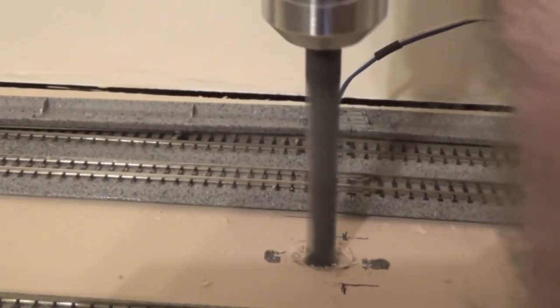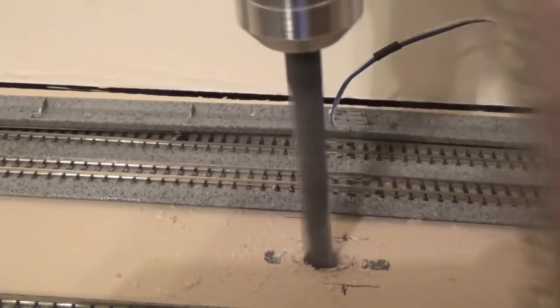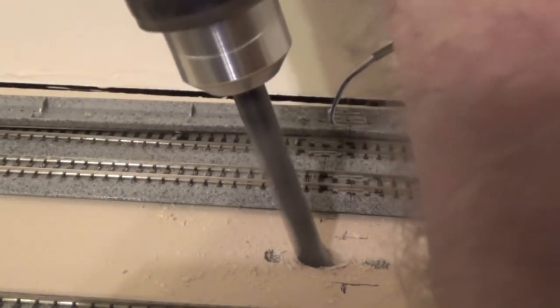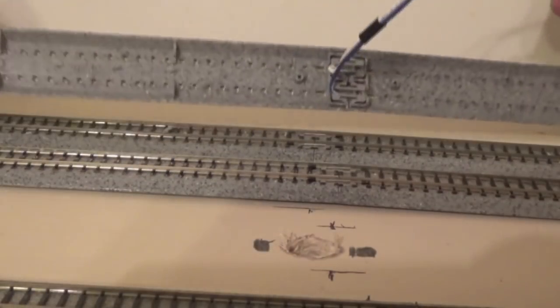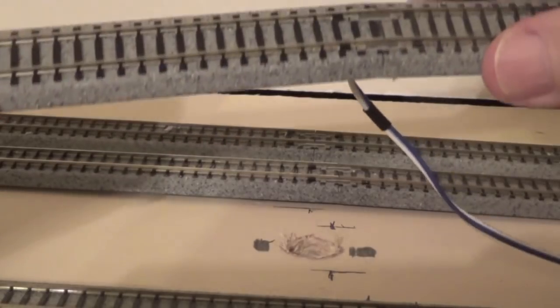Okay it's time to drill holes for the Kato drop feeders. Drilling large holes in the plywood gives me more wiggle room for the drop feeders and track as you will see in a moment. I am double checking to make sure that I got the white feeder and blue feeder wires on the correct rails. If I reverse them it will cause a short in the layout.